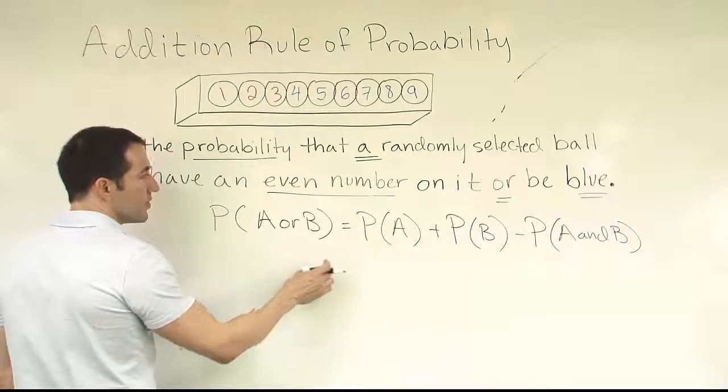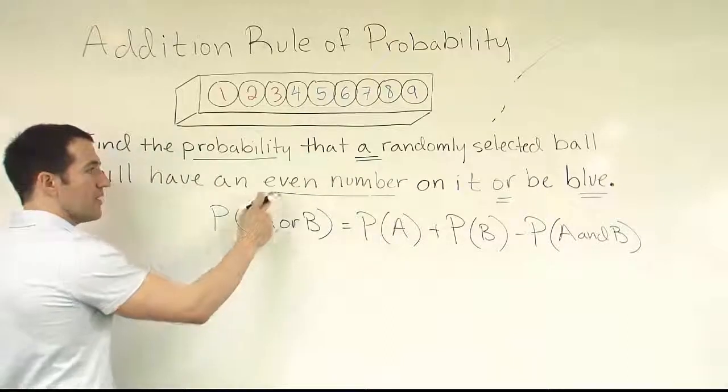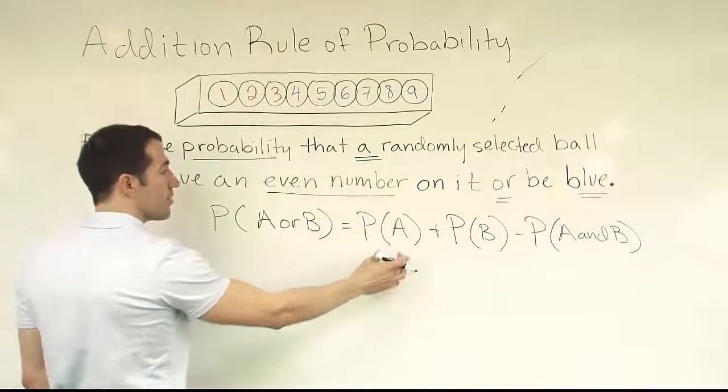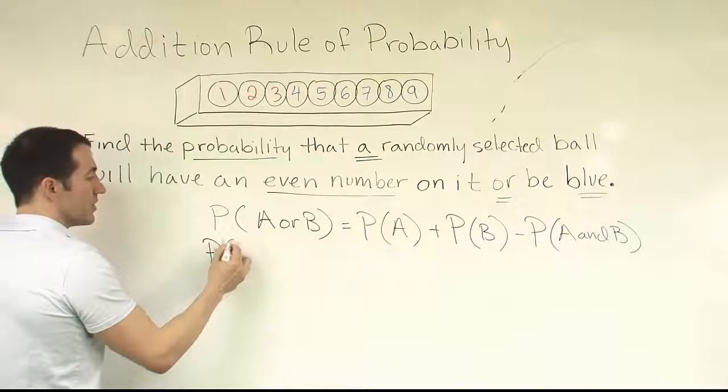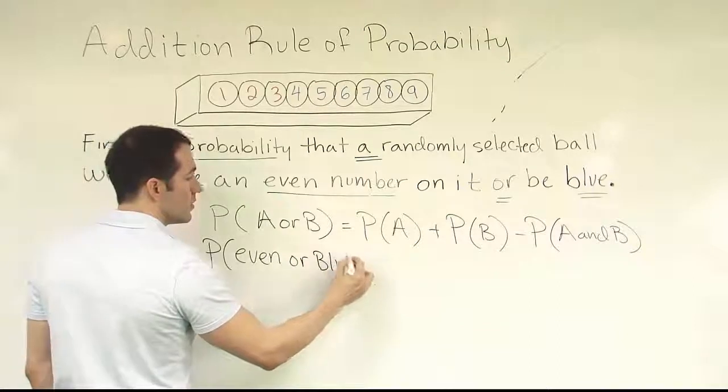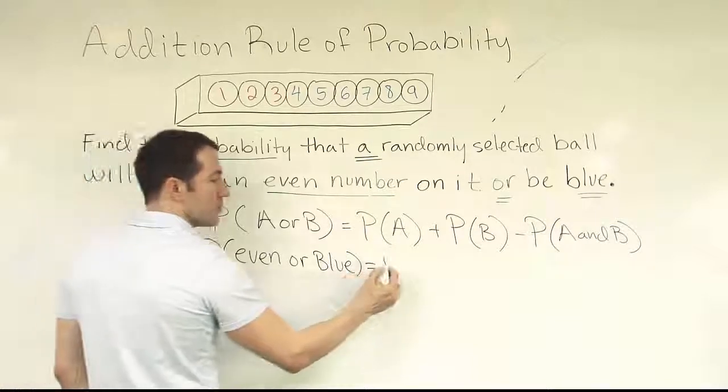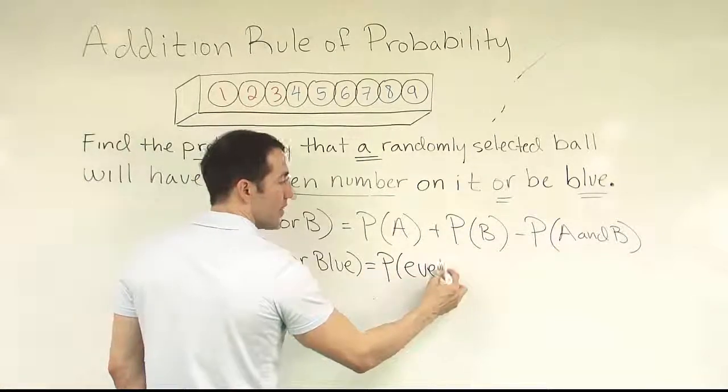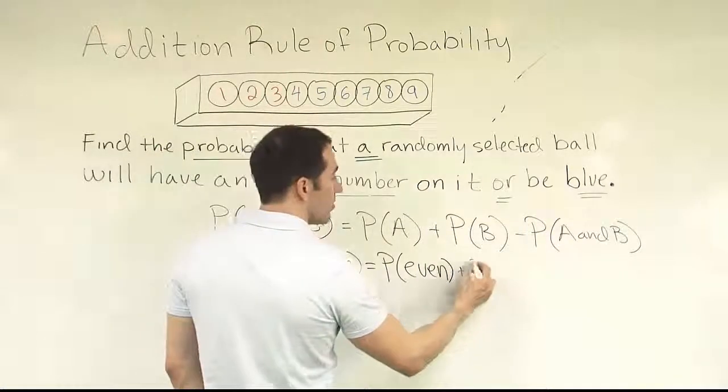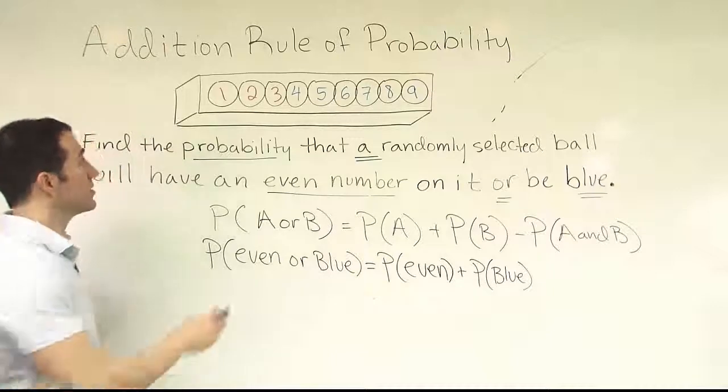Okay, so for us, what we want to do is to set up our problem above according to this structure. Where the A will be the even number. So the probability of an even number or the B will be blue, right? So our first fraction would represent, let's actually write it out. So we're going to say the probability of even or blue. So our probability of A, the probability of the first thing is going to be the probability of an even number. So it'd be the probability that we get an even value. Plus the probability of B. For us, that's going to be the probability of blue. The probability that we get a blue ball, a ball that's painted blue or has a blue number on it, right?